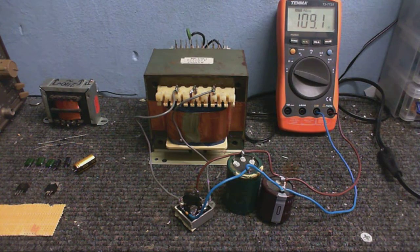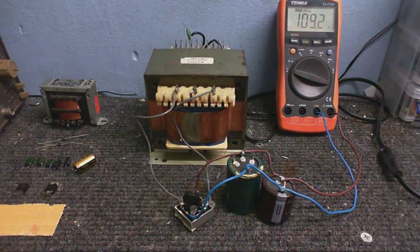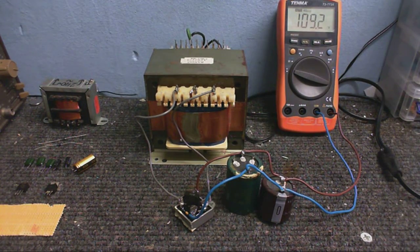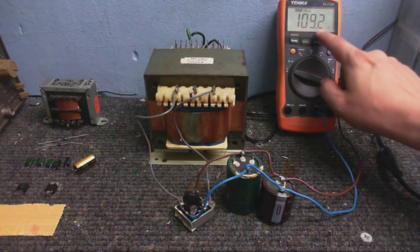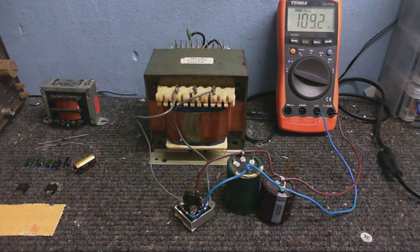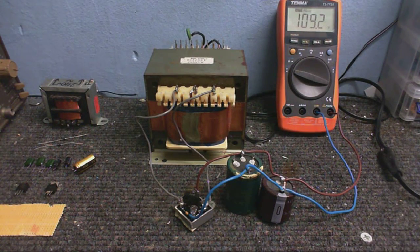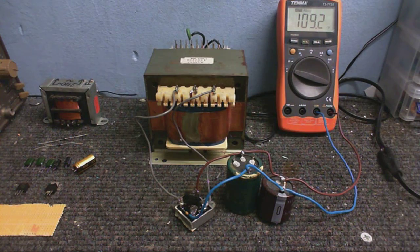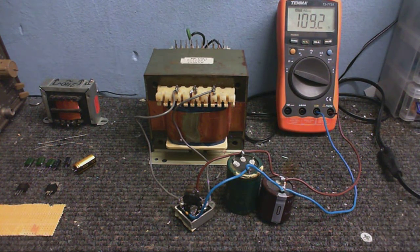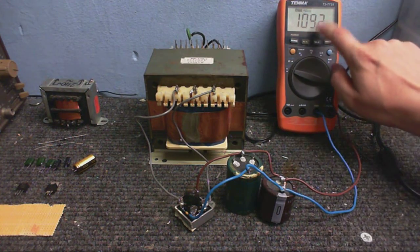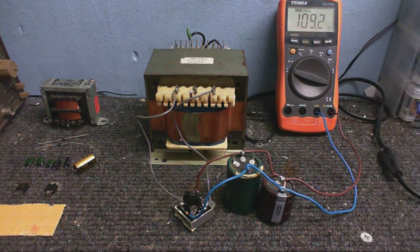We've got 109 volts DC. Some of you might be wondering, what's the deal with that? The output of the transformer was like 70-something volts. So how come we've got 109 volts now? Well, you've got to remember, when AC, you know, it's changing direction all the time. It's going up and down, and when you're measuring AC, it's the average voltage that you see on the meter, not the peak voltage. When we rectify AC to DC, we get the peak voltage, which is, in this case, 109 volts.